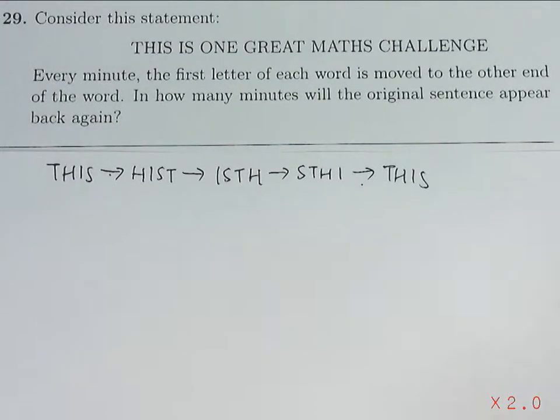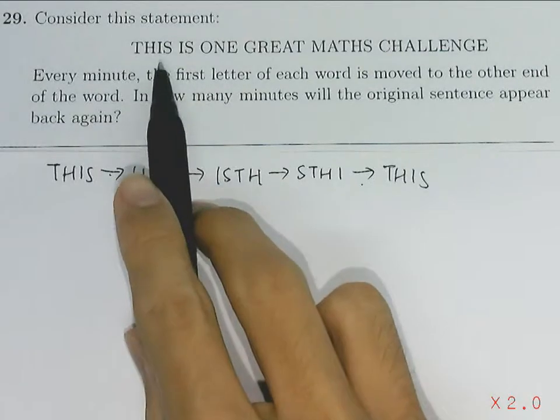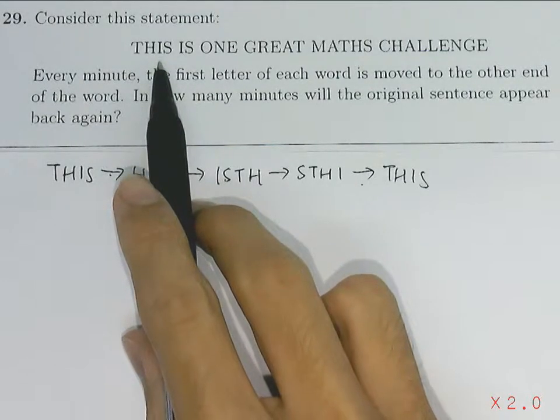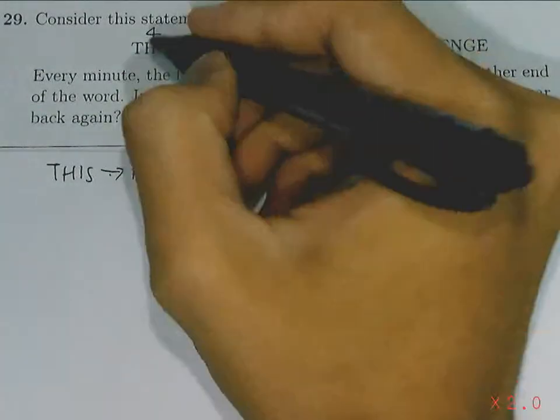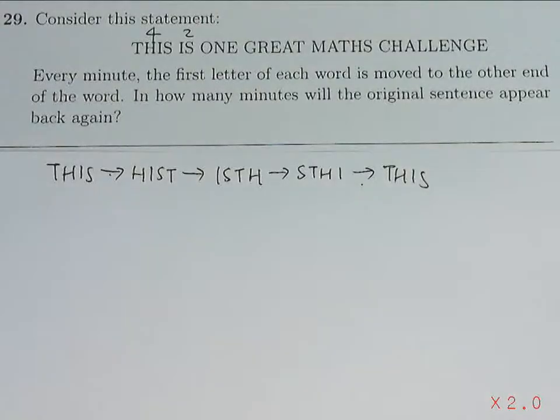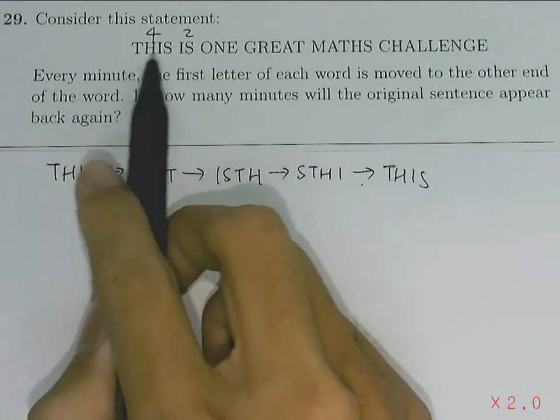So from here, let us just find out each word, how many minutes it takes for them to appear again. For this, it will take 4 minutes. For is, it will take 2 minutes. So the number of minutes it takes is the same as the number of letters it has.